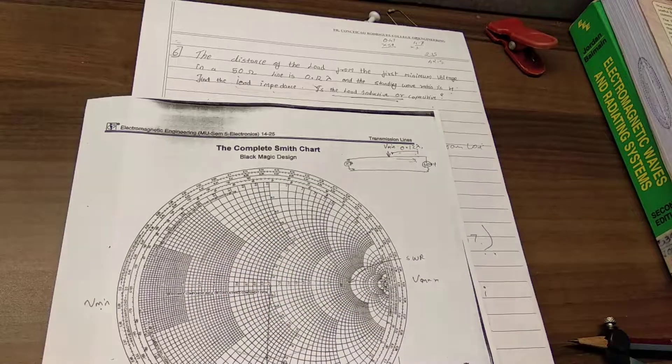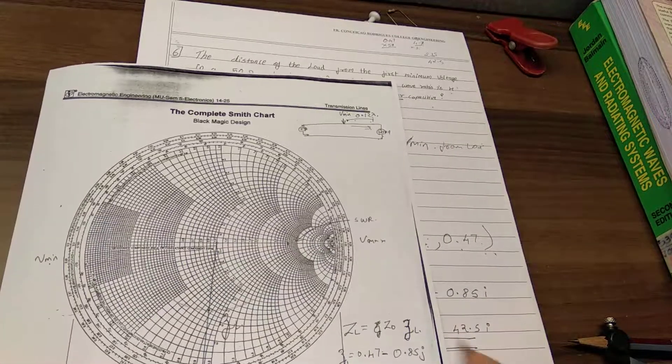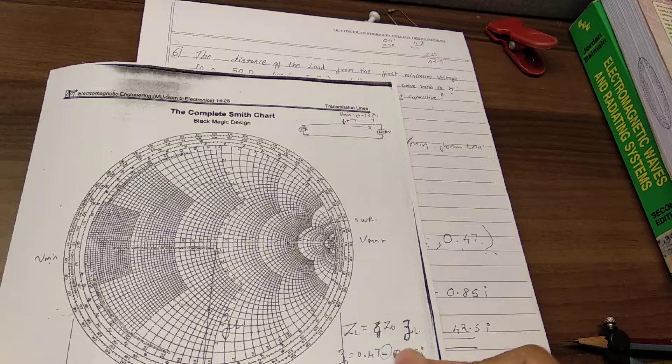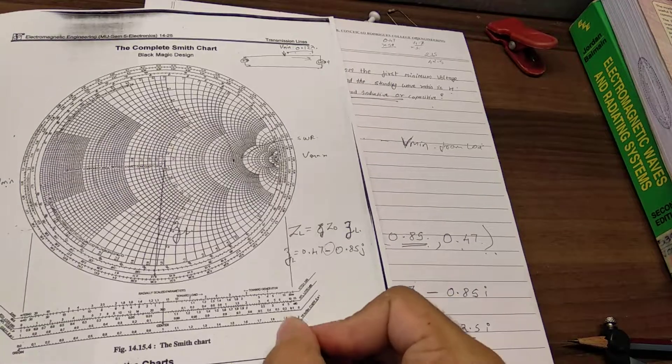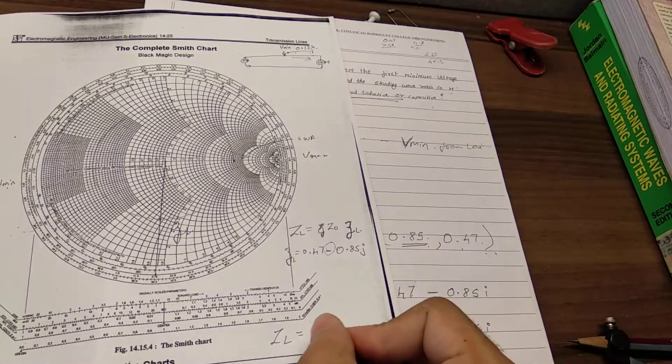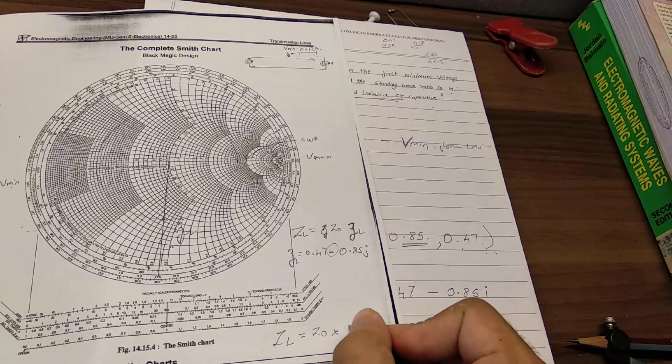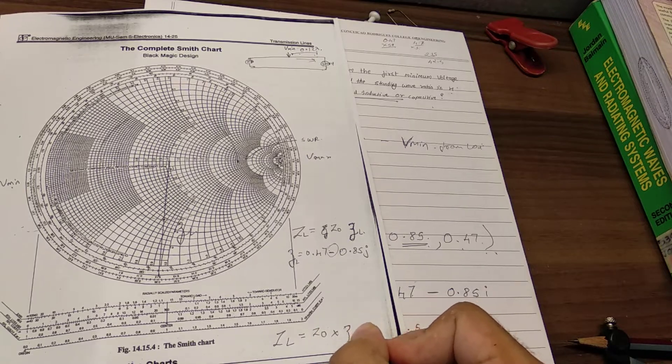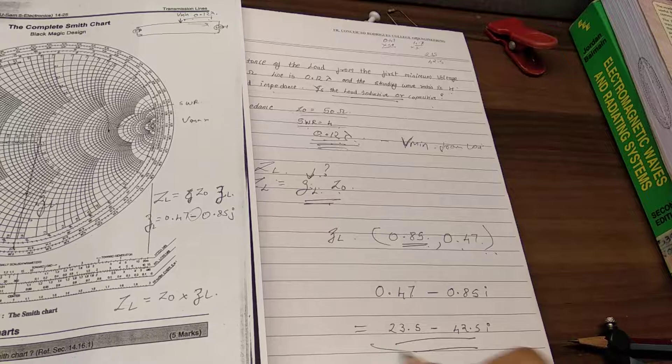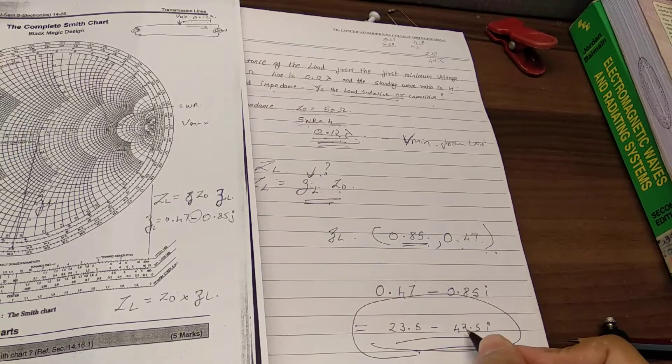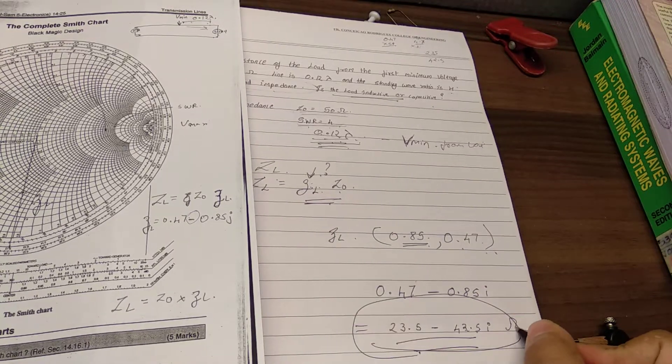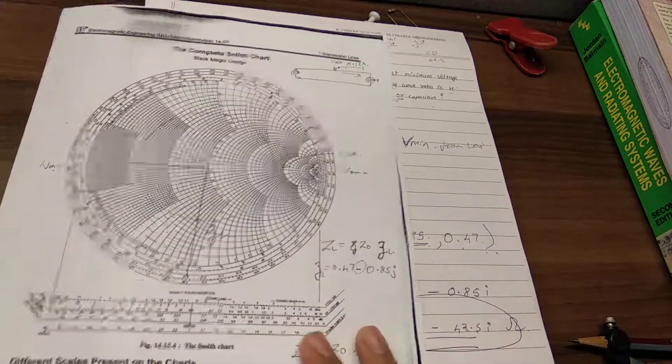Because the load is capacitive. This is capacitive and this is inductive loads. So the load is capacitive because of course this is minus sign. So now my ZL would be easily found out, which is Z0 times small zl, which I get around 23.5 minus 42.5j ohms. This is my ZL.